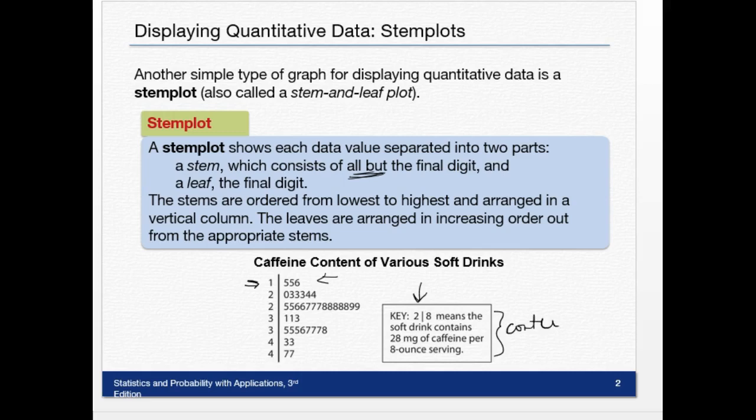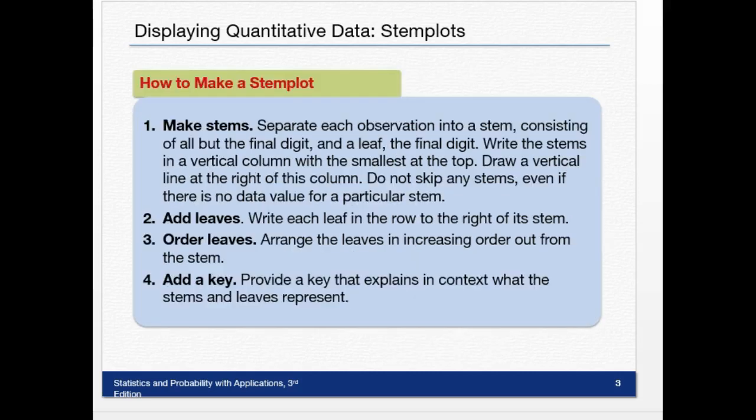Here are the steps to make a stem plot. First, make stems: separate each observation into a stem consisting of all but the final digit and a leaf which is the final digit. Write the stems in a vertical column with the smallest at the top. Draw a vertical line at the right of this column and do not skip any stems, even if there's no data value for that particular stem.